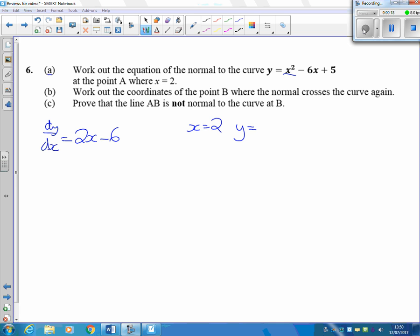The y value, throw a 2 in there, so I've got 4 take away 12 add 5, which is minus 3. And our gradient is going to be, throw the 2 into here, gives us 4 take away 6, which is minus 2.